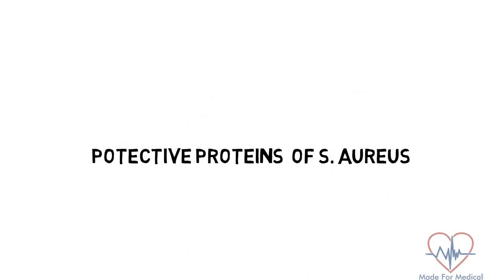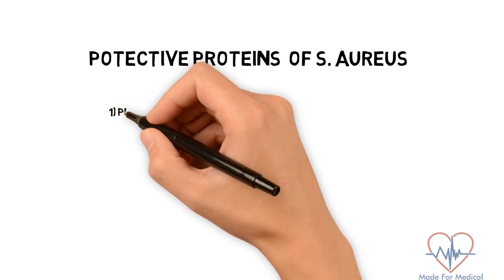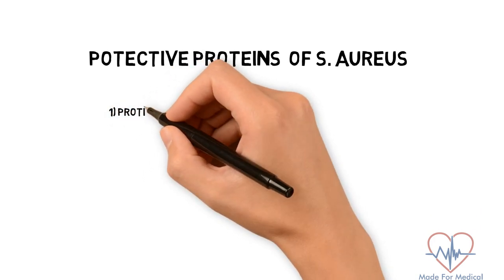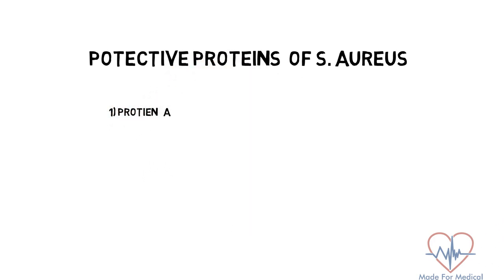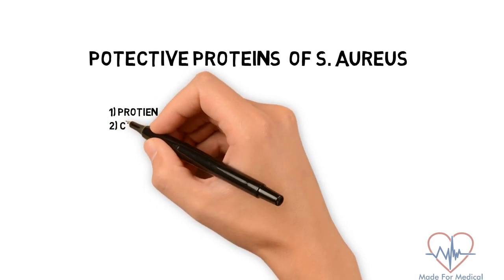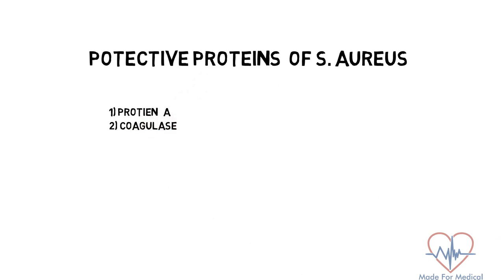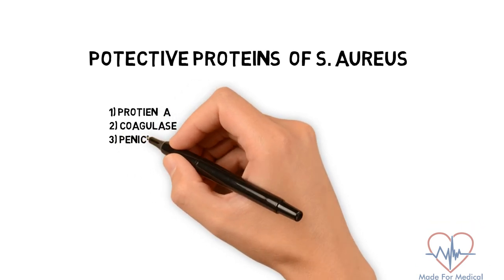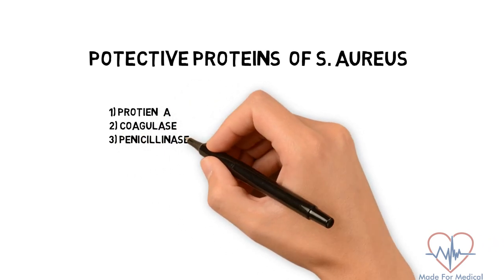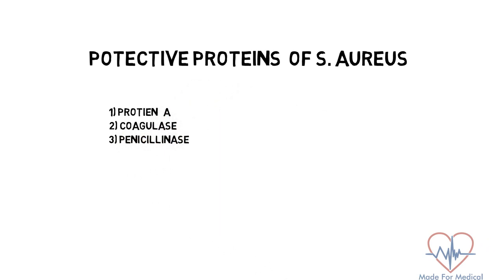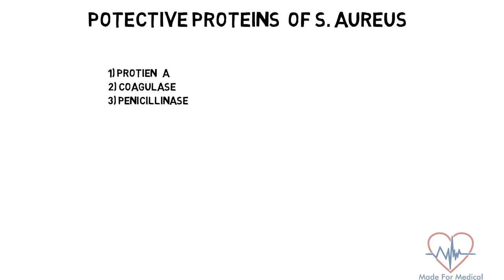Staphylococcus has got some protective proteins to defend themselves. These include protein A, which binds to the antibodies and inhibits them — thus, antibodies cannot destroy Staph aureus. The other one is coagulase, which forms fibrin strands around the bacteria. And the last one is penicillinase, which provides protection to the bacteria against penicillin.